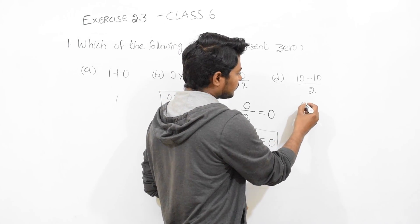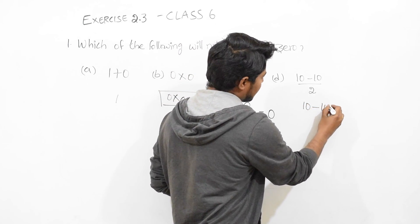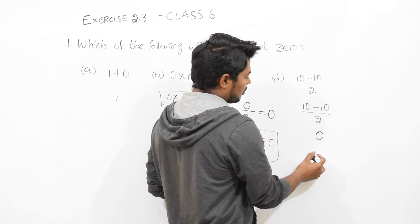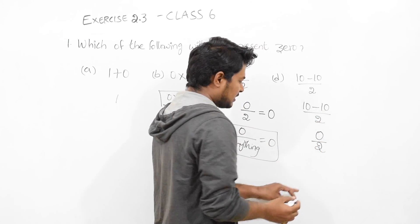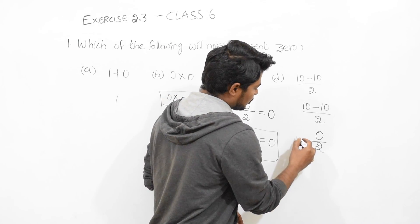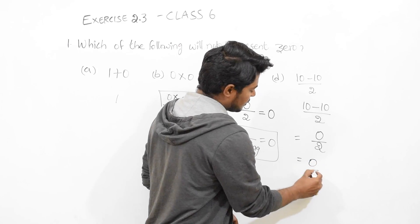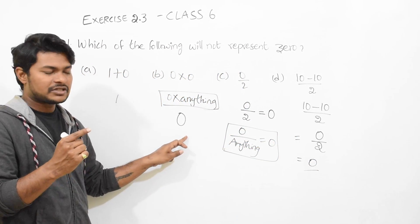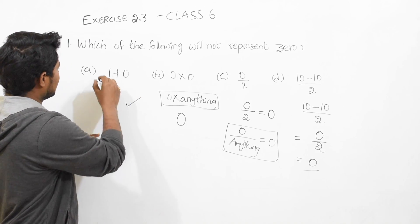Option D: 10 minus 10 divided by 2. What is 10 minus 10? It's 0 divided by 2. This is also in the form of 0 by anything, which equals 0. So it is 0, it is 0, it is 0, and only one thing which is not 0 is option A.